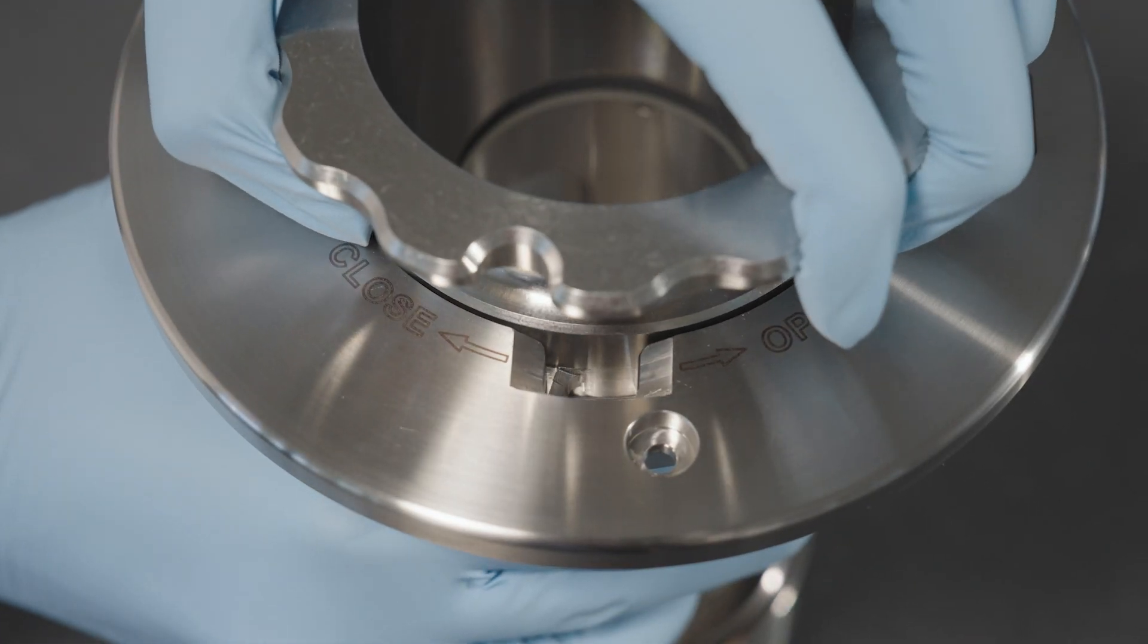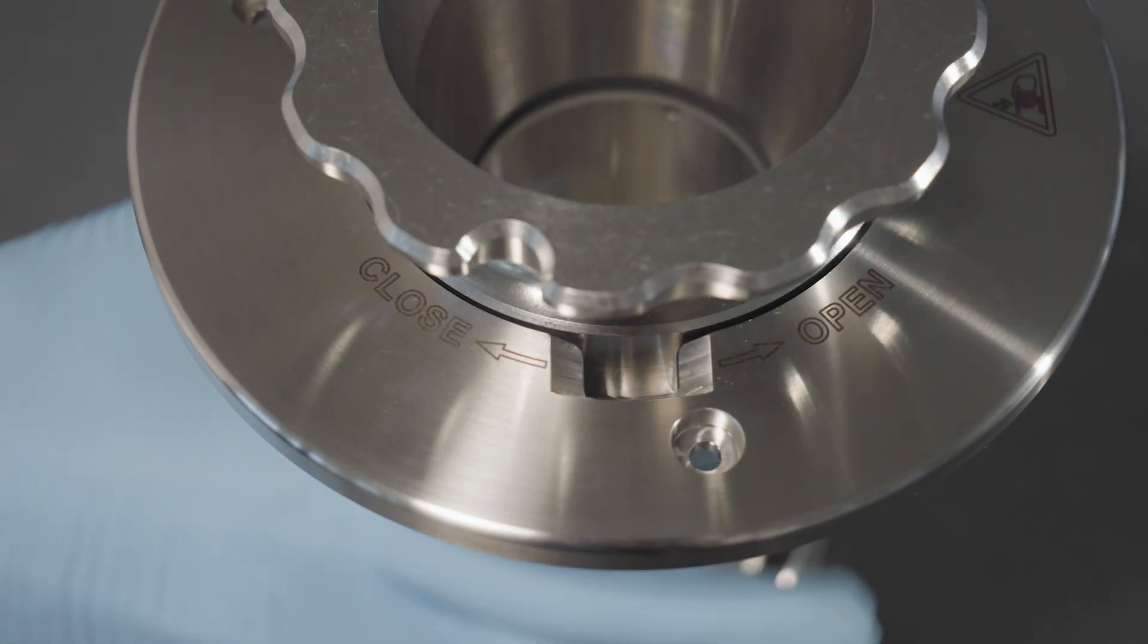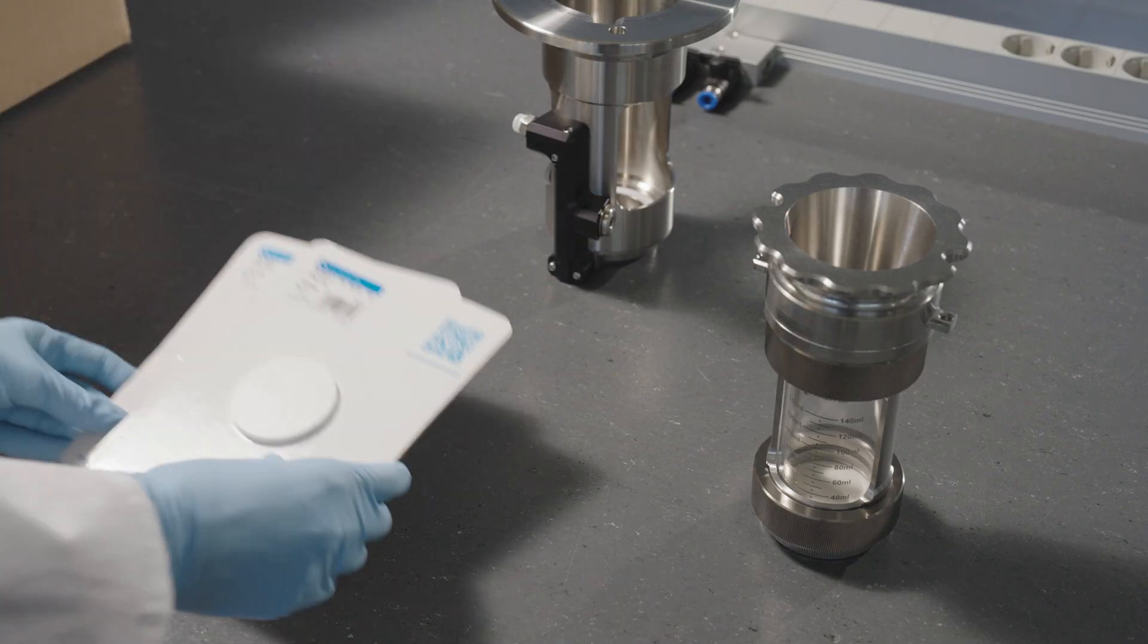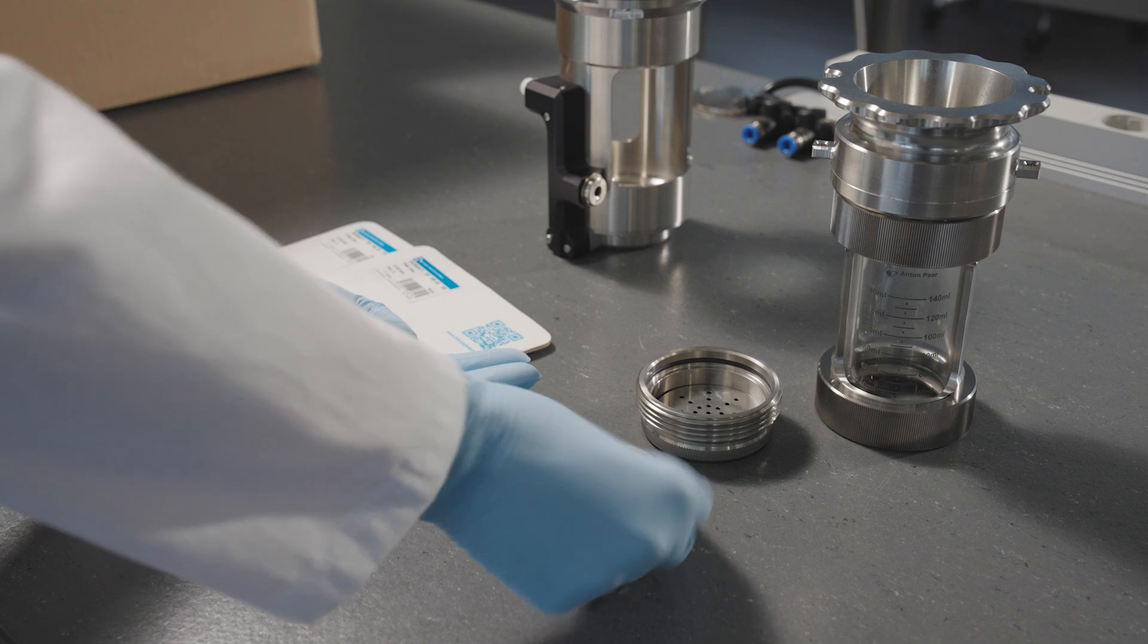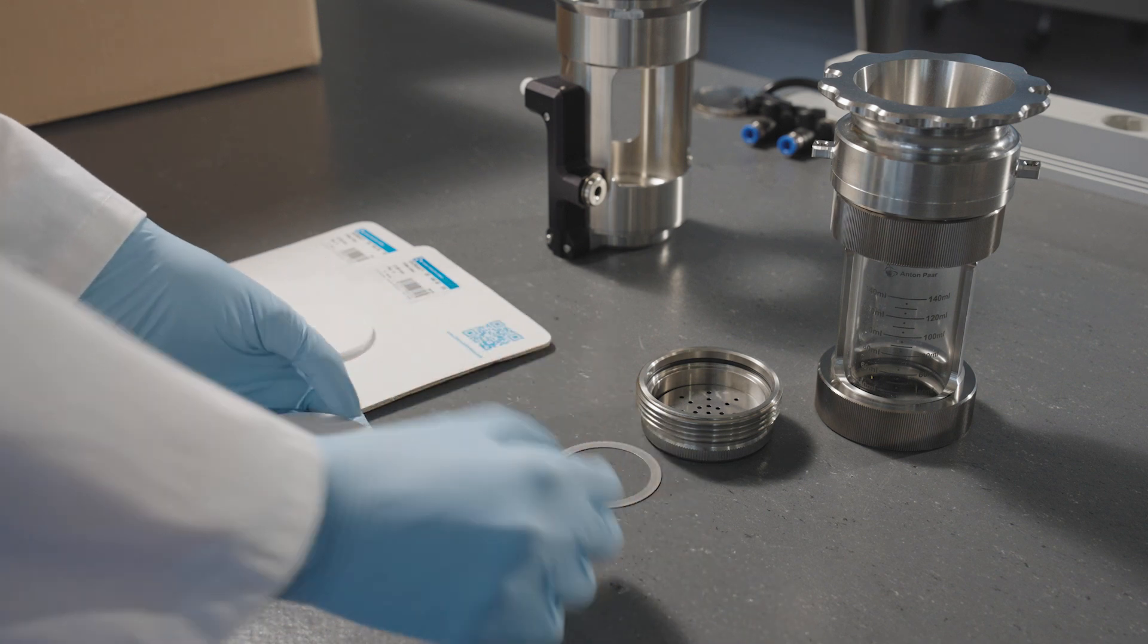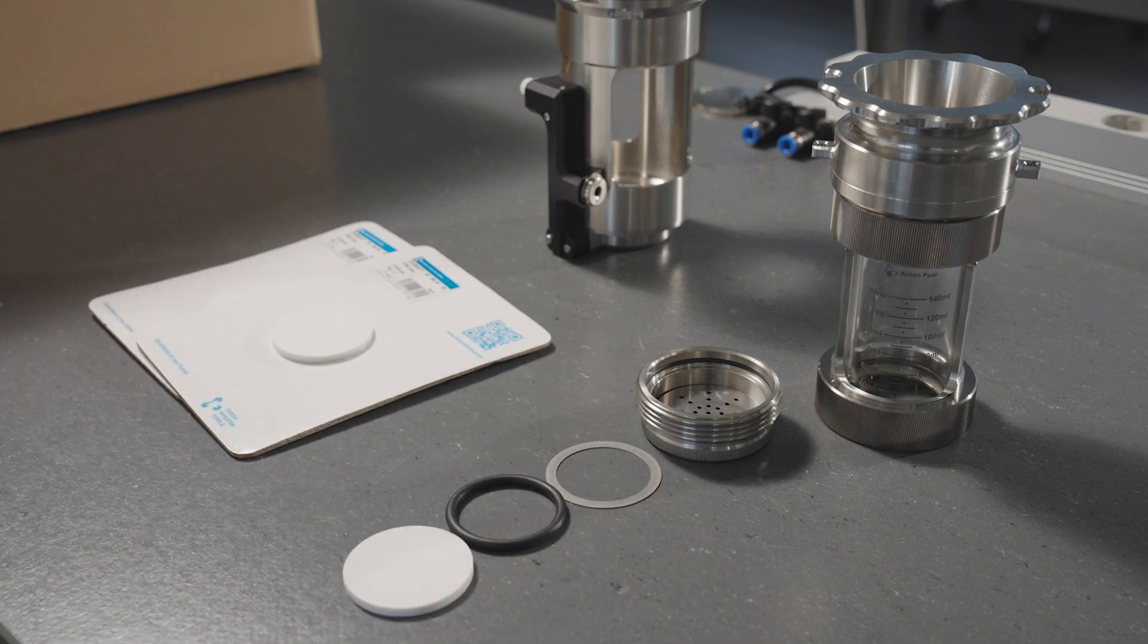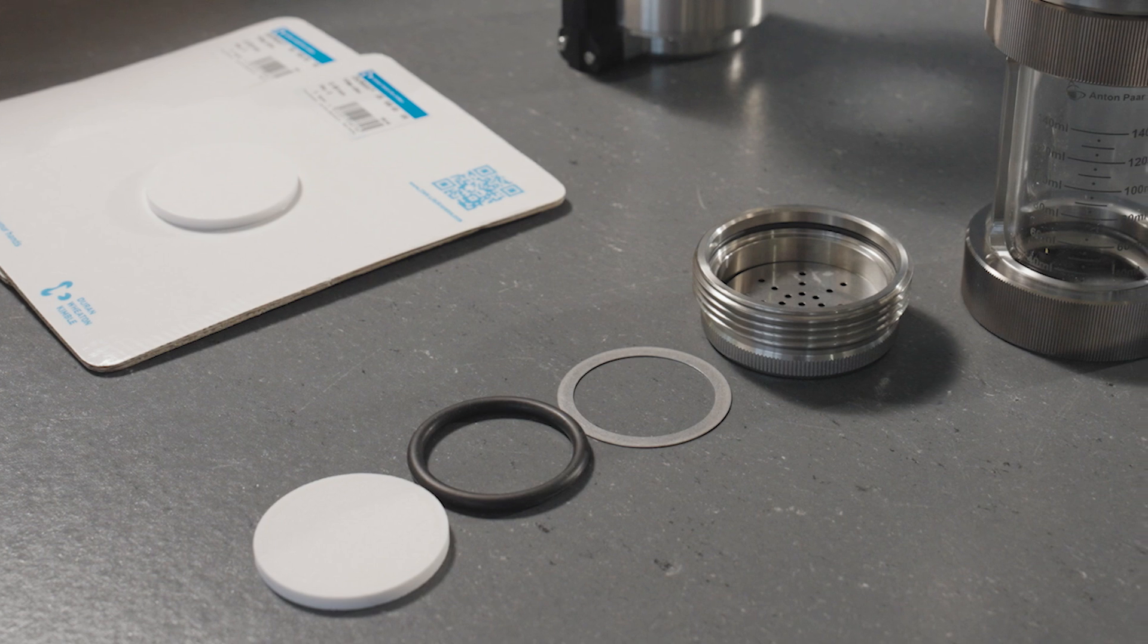Incorrect assembly will prevent the locking mechanism from engaging. If the measuring cell base is damaged or leaking, the permeable base plate must be replaced. Unscrew the lower part of the measuring cell and replace the gasket. Clean the screw connection regularly.